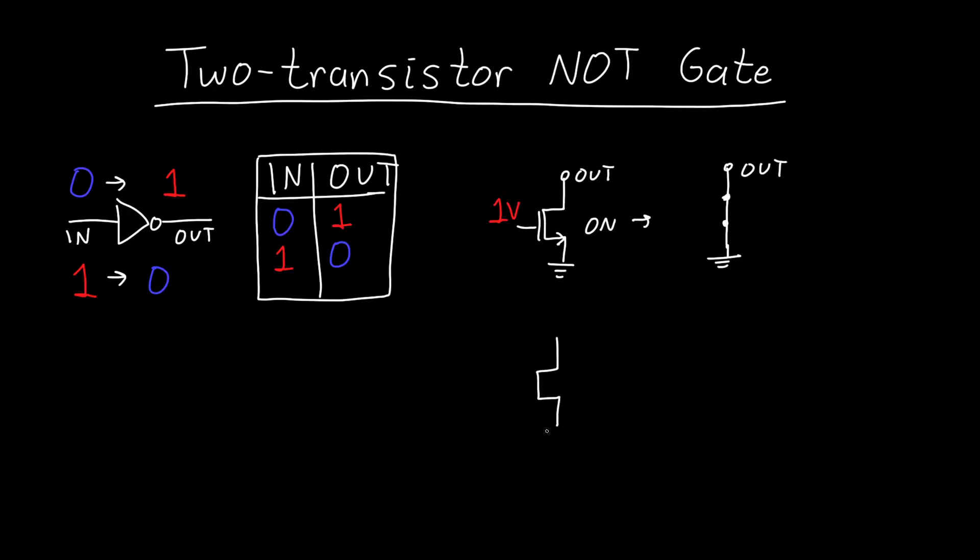If instead we have an NMOS transistor where the input is 0 volts, and this is our output, then this looks like an open circuit. So we have ground over here, but our output is not connected to anything. In this case, our output was 0 volts or ground. And so we can start to make a NOT gate out of this, because when our input is 1, our output is 0, and that's what we want. But when our input is 0, our output is nothing. It's not connected to anything. So how do we fix this?